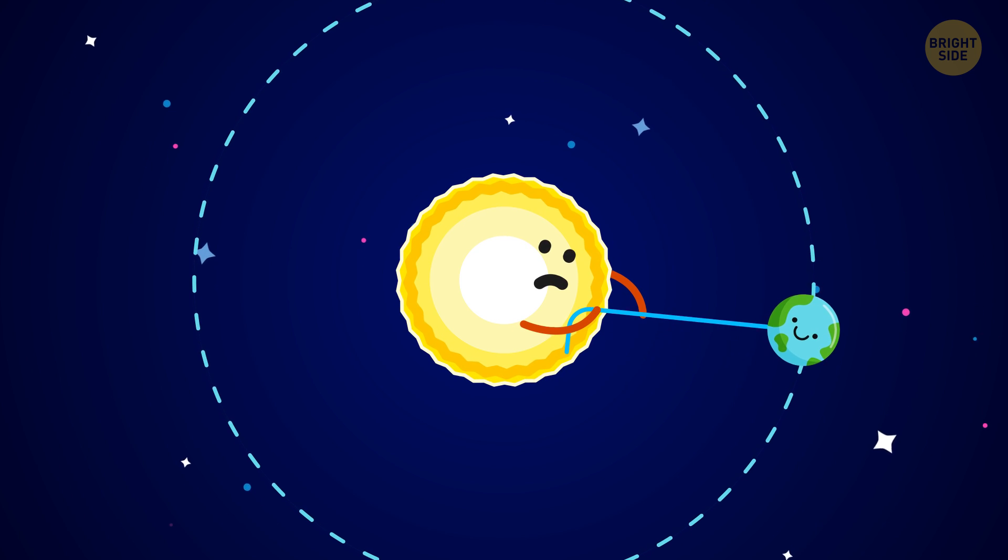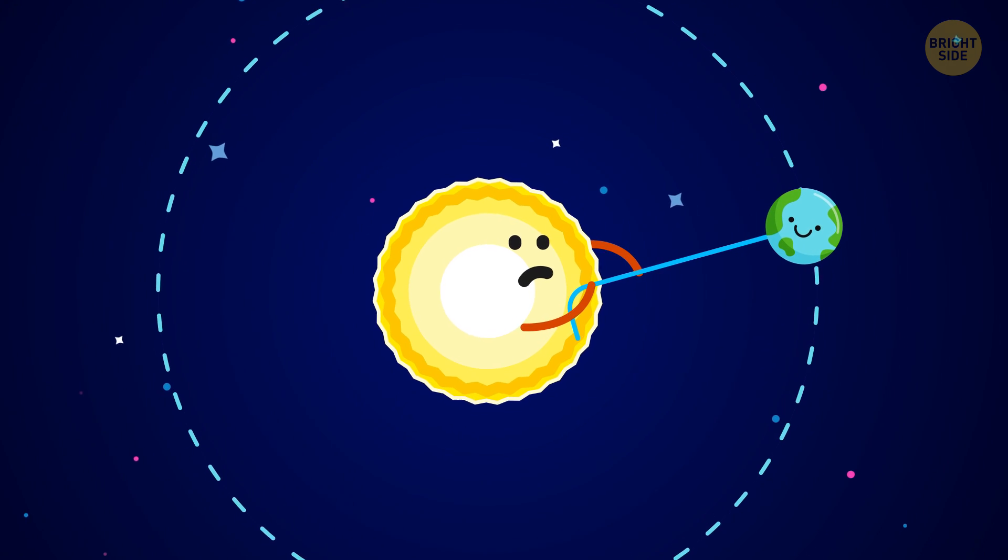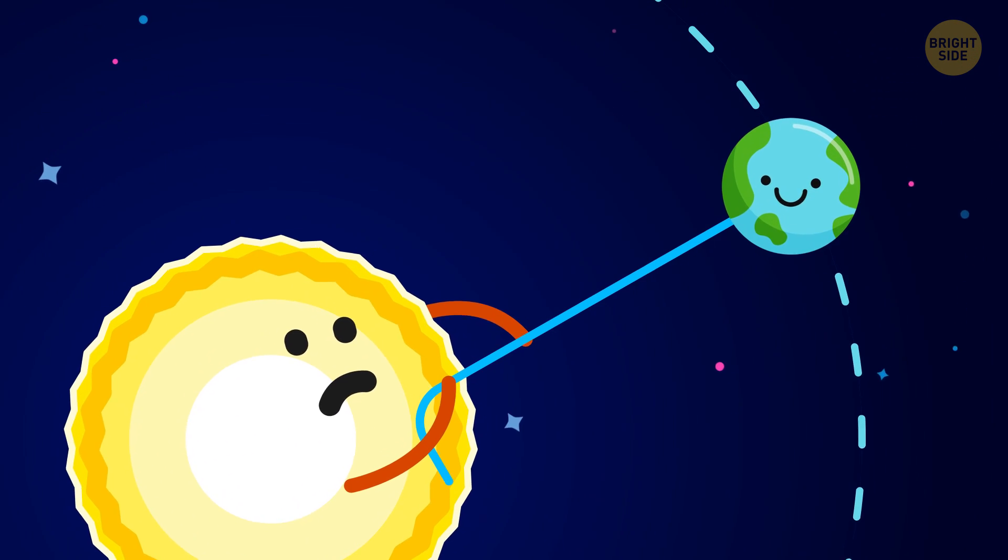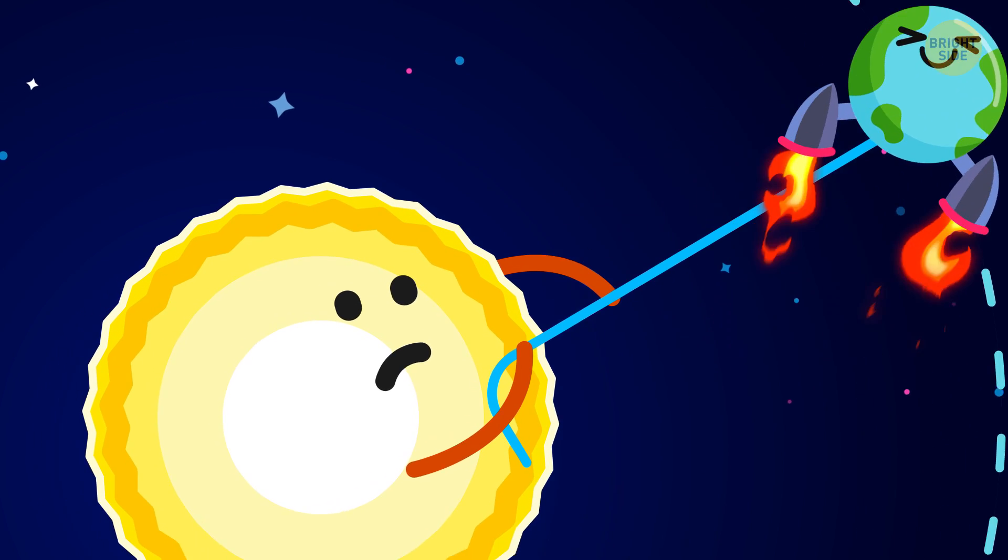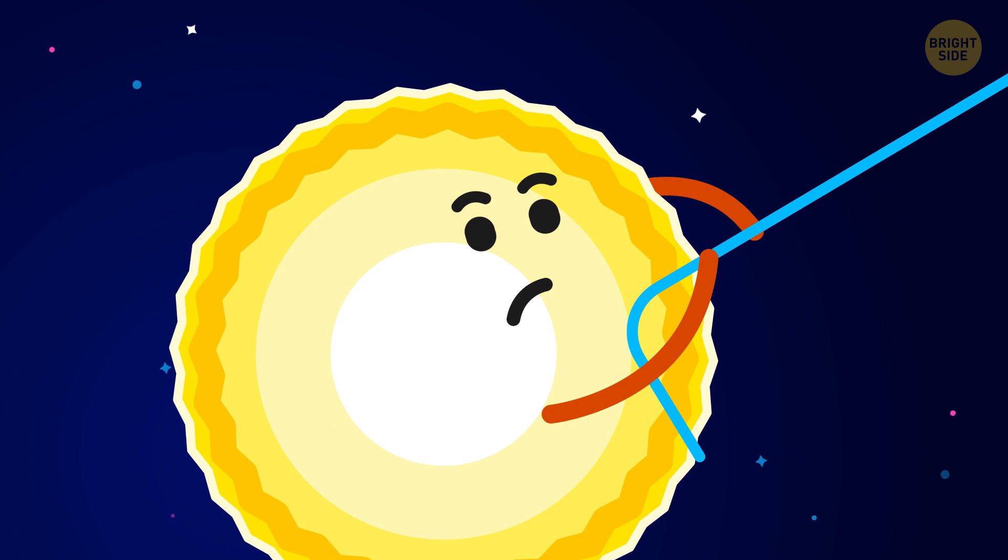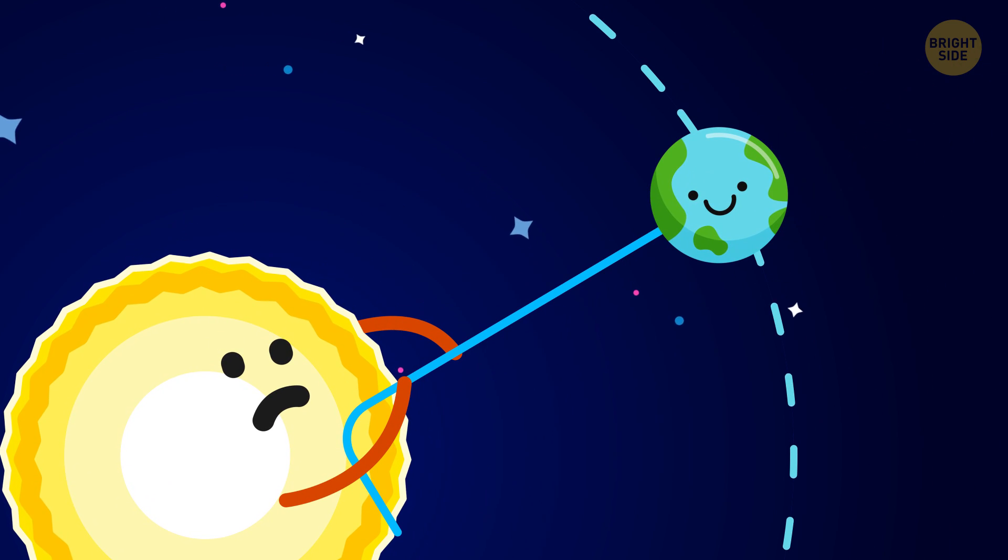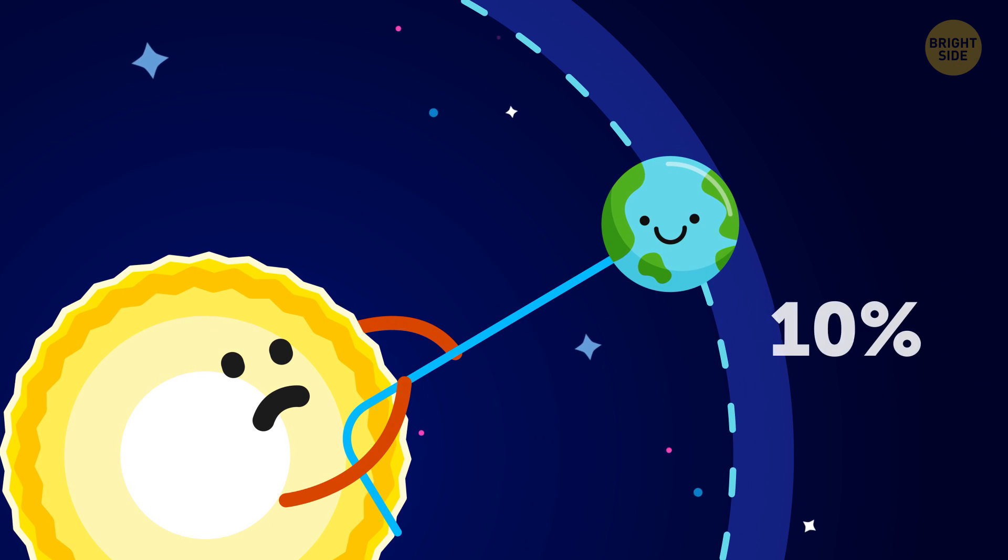Look, the Earth's orbit depends on a delicate balance that exists between gravity pulling it toward the Sun and velocity carrying it away into space. If the gravity changed, even slightly, it'd completely disrupt the existing balance, and the Earth would move into a new orbit.